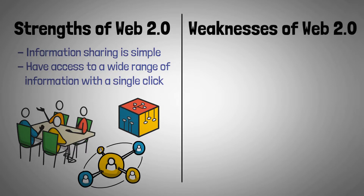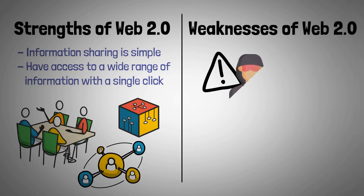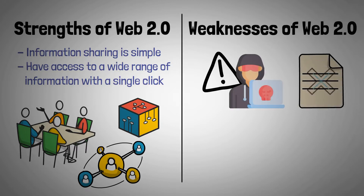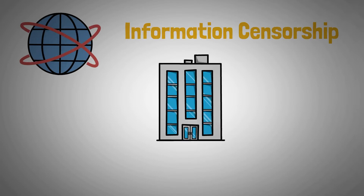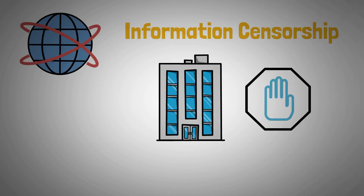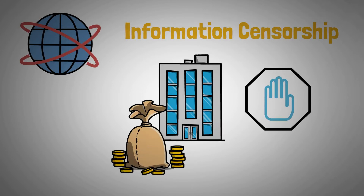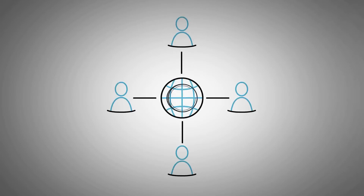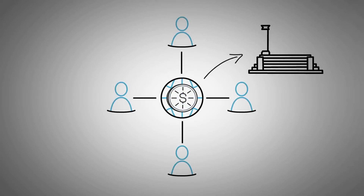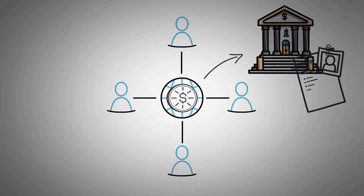Web 2.0 also has its fair share of weaknesses. There is a risk of viruses, fraud, and spam attacks, and a risk of receiving incorrect information because the variety, veracity, and volume of information are vast. It offers inadequate security, as Web 2.0 platforms have access to and store almost all user data. There is information censorship by big tech companies, and economic benefits are limited to big tech despite users primarily generating the content. It relies on a centralized financial system managed by a few central banks and financial institutions.